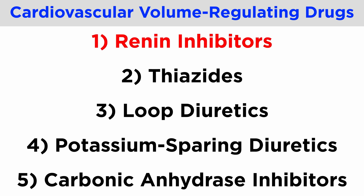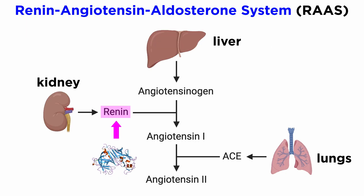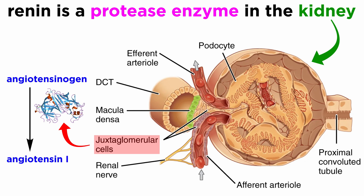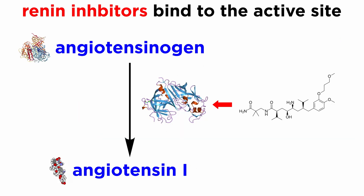These are renin inhibitors, thiazides, loop diuretics, potassium-sparing diuretics, and carbonic anhydrase inhibitors. We discussed the role of renin in the previous tutorial within the context of the renin-angiotensin-aldosterone system, the main physiological homeostatic mechanism for regulating blood volume. To provide a little more detail, renin is a protease produced by the juxtaglomerular cells in the kidneys that catalyzes the cleavage of angiotensinogen to angiotensin-1. Renin inhibitors bind to the active site of the enzyme and inhibit the production of angiotensin-1 from angiotensinogen.